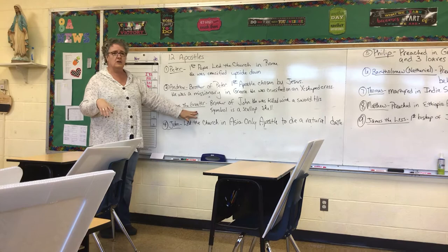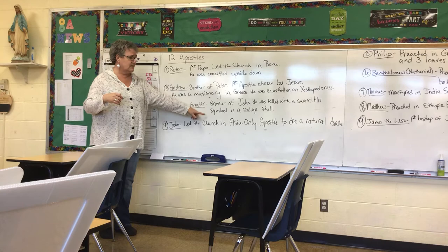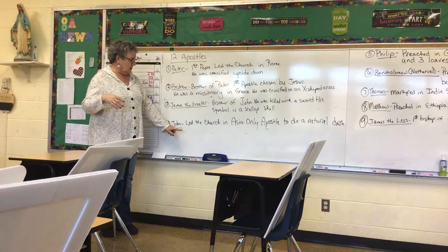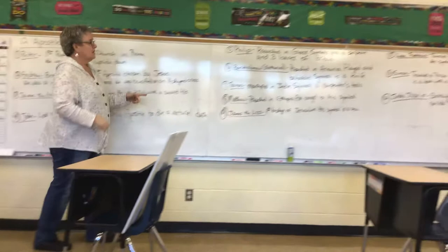James the Greater — remember, greater and less doesn't mean this guy was better than the other one or that Jesus liked him more. This just means he was older. So James the Greater was the older James. He was John's brother and was killed with a sword. His symbol is a scallop shell because he worked along a lot of sea towns. John led the church in Asia and was Jesus' favorite. He took care of Mary when Jesus died, and John was the only apostle that died a natural death.